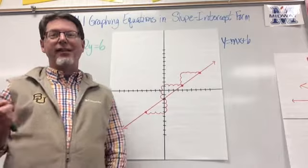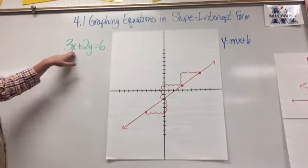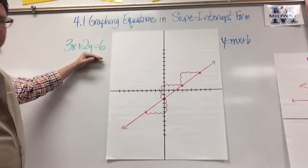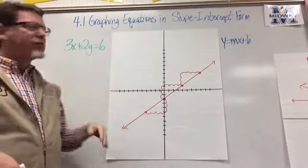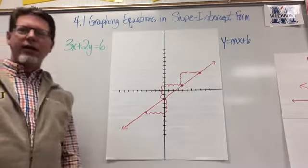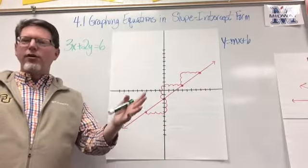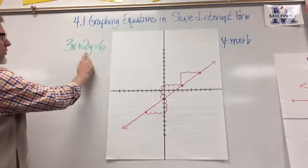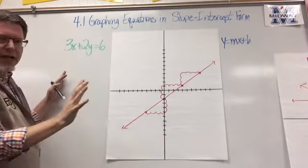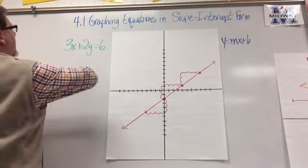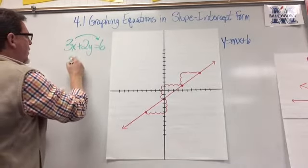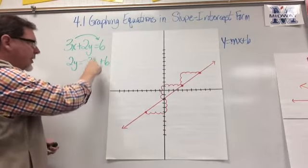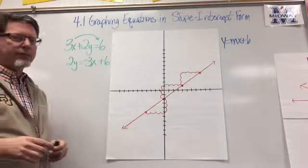Now let's say they give us an equation in standard form: 3x plus 2y equals 6, and they want us to graph it. Since the whole concept is slope-intercept form, I need to convert standard form to slope-intercept form. Slope-intercept form starts with y equals, so I have to solve for y. I move the 3x to the other side — it becomes negative 3x — giving me 2y equals negative 3x plus 6. I write it in that order to match the y equals mx plus b format.